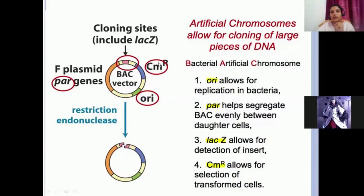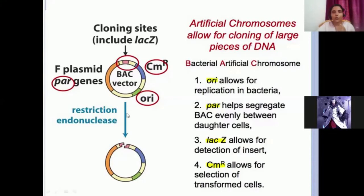There is also a CMR gene — chloramphenicol antibiotic resistance — though this can differ between different BACs; some have ampicillin resistance and some have chloramphenicol resistance. Importantly, there is a cloning site containing the LacZ gene, which helps identify whether a foreign DNA has been inserted. When a restriction enzyme like EcoRI cuts within the LacZ gene and the new DNA fragment joins there, the LacZ gene becomes non-functional and stops producing beta-galactosidase.